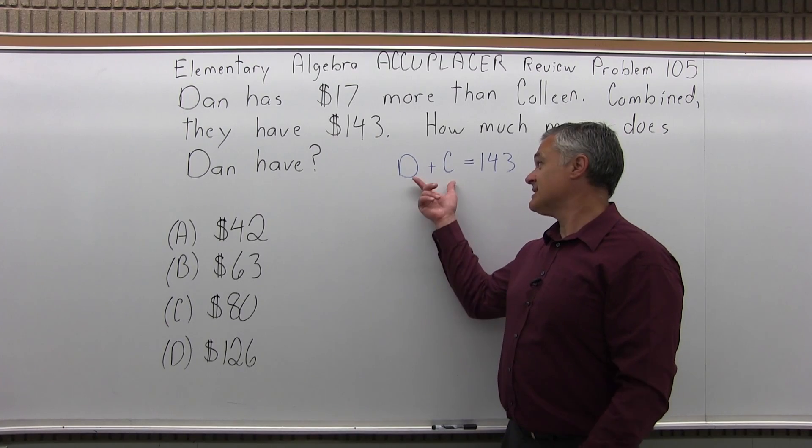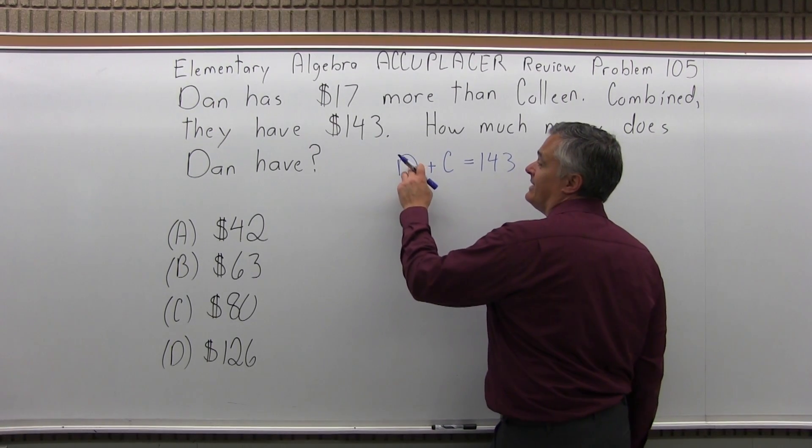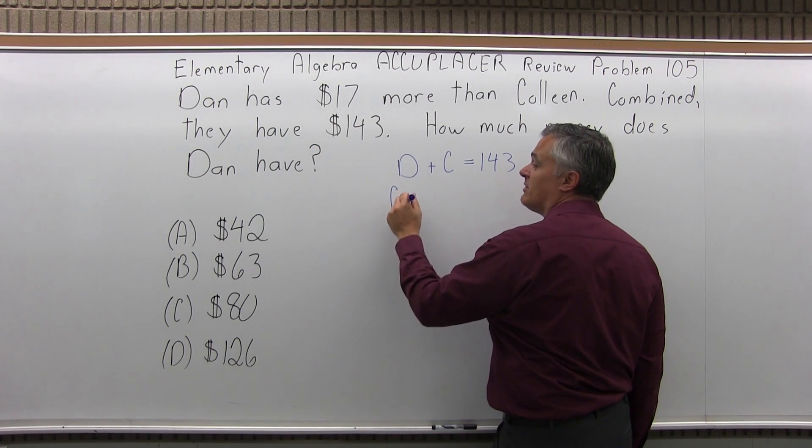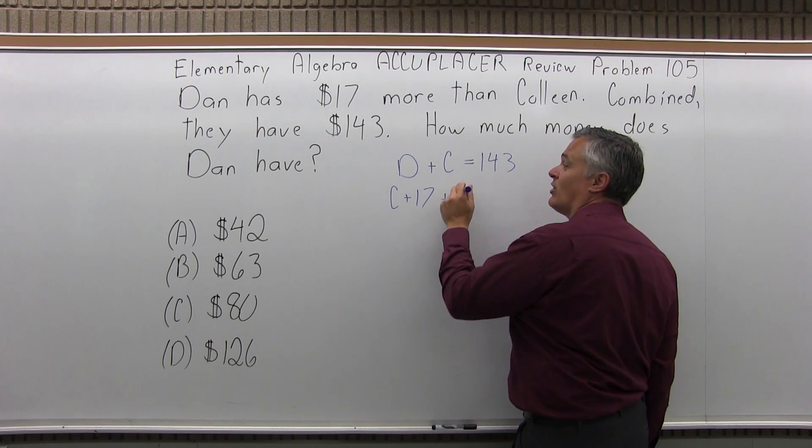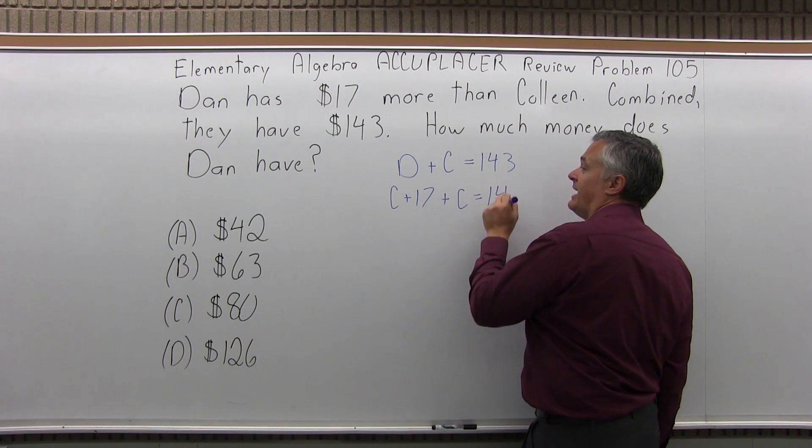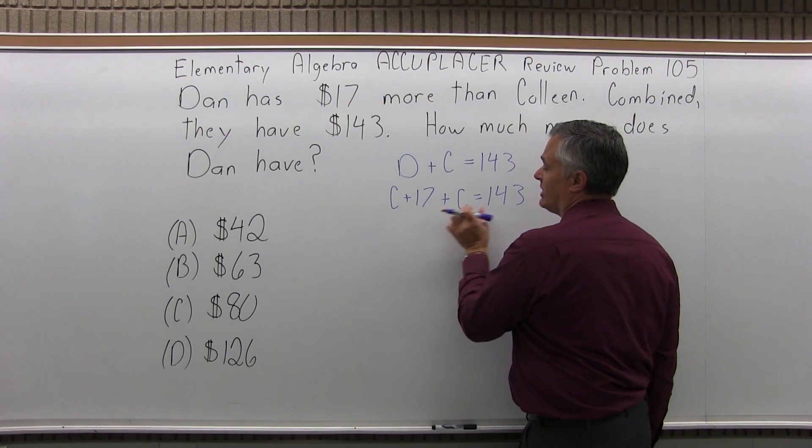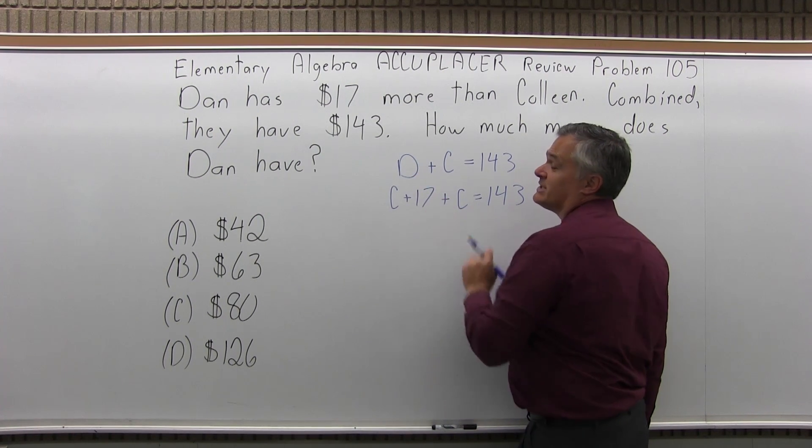Now the problem with this is I have two variables. I want to just have one. But Dan has $17 more than Colleen. So Colleen's amount of money plus $17 can be used to replace Dan. Plus the money Colleen has adds up to $143. That's still Dan plus Colleen adds up to $143, but I know Dan is Colleen plus $17 more.